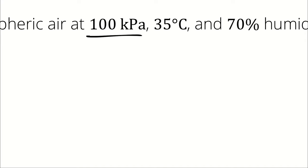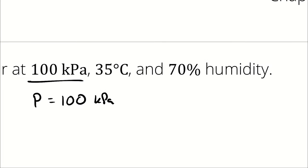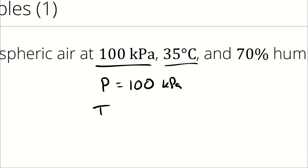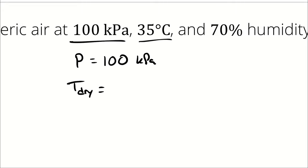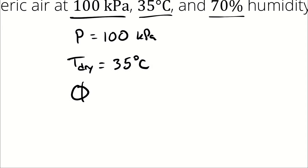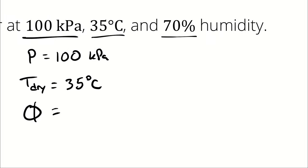Next, is 100 kilopascals the pressure of the atmospheric air, the dry air, or the water vapor? That is the atmospheric air, which does not get a subscript — that is not the same as the partial pressure of dry air nor water vapor. Is 35 degrees Celsius the dry bulb, the dew point, or the wet bulb temperature? That is dry bulb temperature. Is 70% humidity a relative humidity or a humidity ratio? It is a relative humidity — we know because relative humidity is expressed as a percentage, and humidity ratios are going to be much smaller numbers than 0.7.